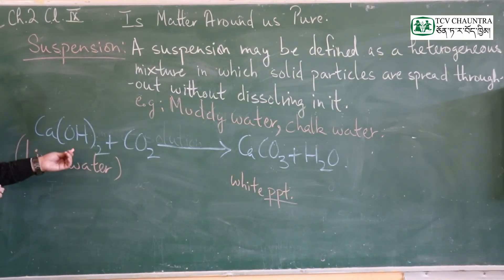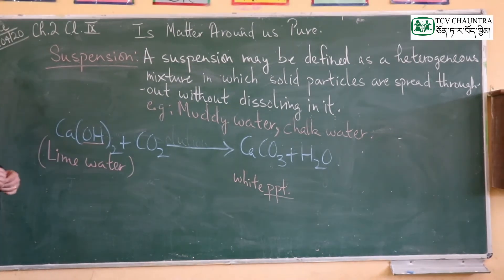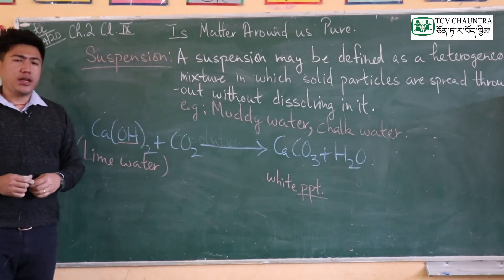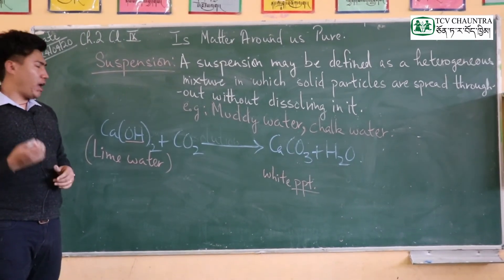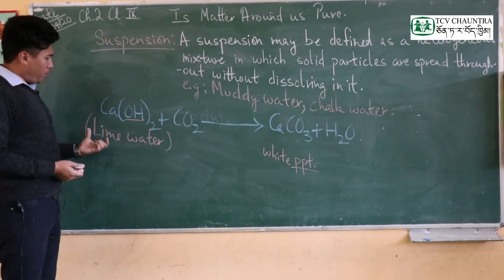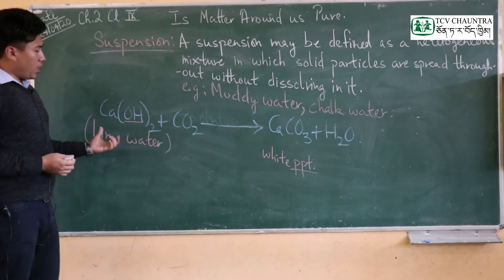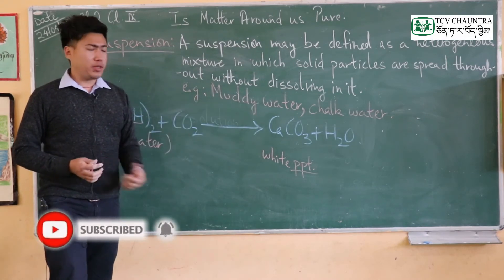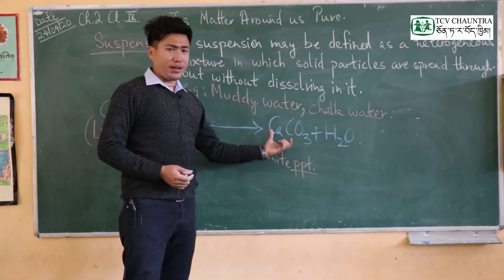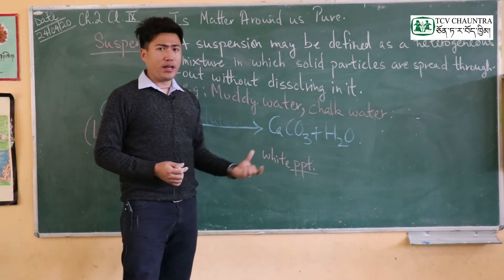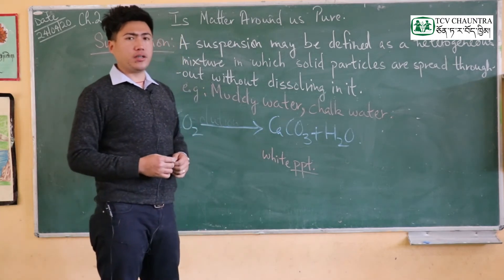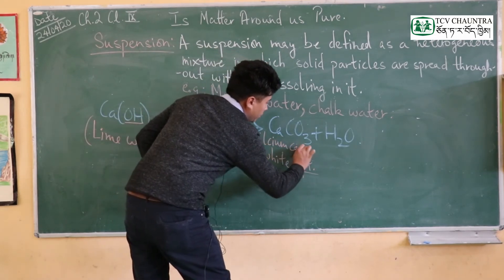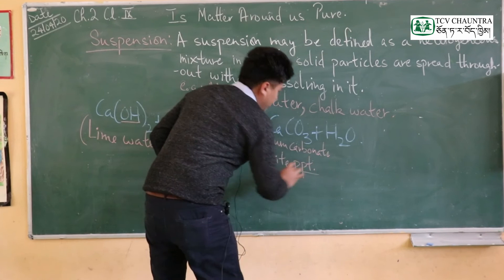Calcium hydroxide — its IUPAC name and its common name is lime water. When carbon dioxide gas is passed through lime water (calcium hydroxide solution), a reaction occurs. Calcium hydroxide plus carbon dioxide gives calcium carbonate and water. Calcium carbonate formation causes the lime water to turn milky — this is called a milky appearance.